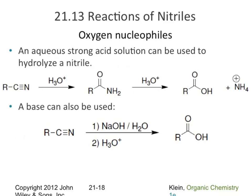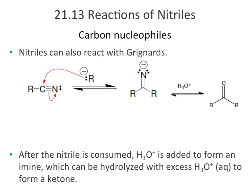Reacting nitriles with oxygen nucleophiles is the reverse of making a nitrile from an amide — we can take it back to the amide. Adding more acid and water pushes it all the way to the carboxylic acid, since amides are in equilibrium with water and carboxylic acids. This can also be done in the presence of a base. Nitriles are also good with Grignard reagents — the nitrile carbon is a good electrophile, and under acidic workup conditions we can convert the product to a carbonyl.